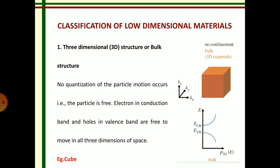First, three dimensional structure or bulk structure. Here, no confinement is there. The particle is freely moving. Electrons in conduction band and holes in valence band are free to move in all the three directions. This is shown with the help of this diagram. A cube is there, then the graph indicates how the particle is freely moving in all three directions.